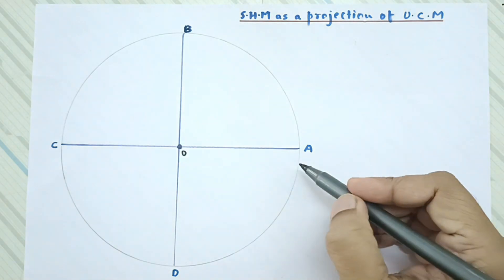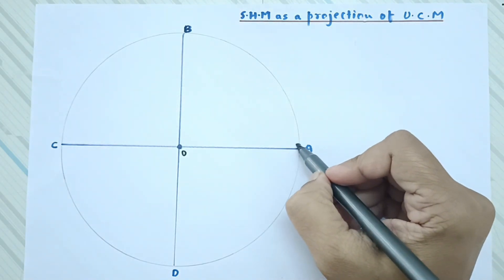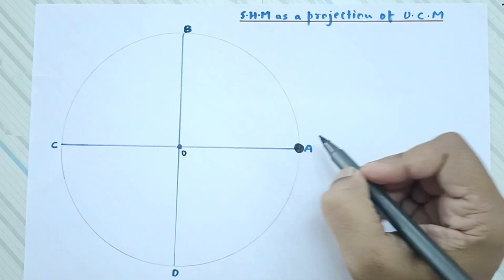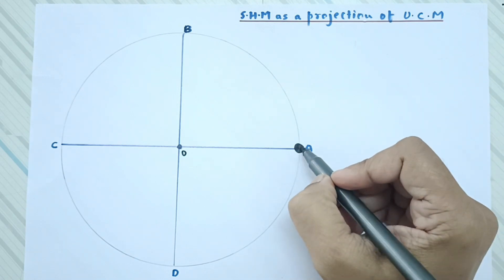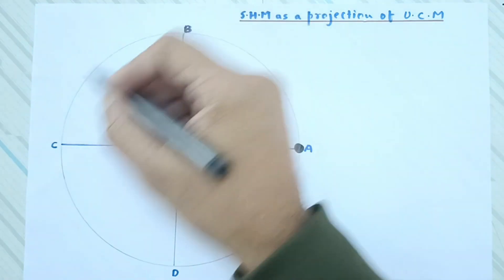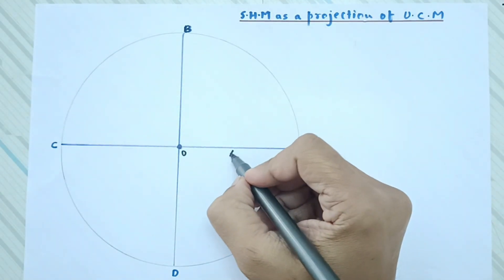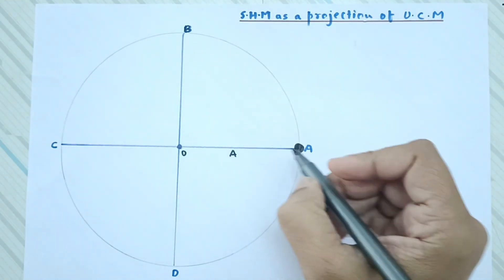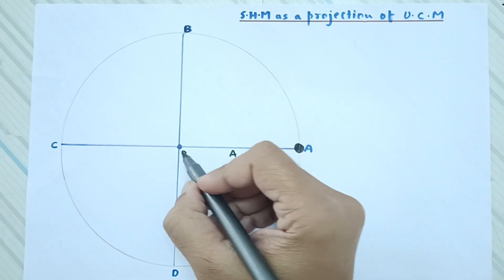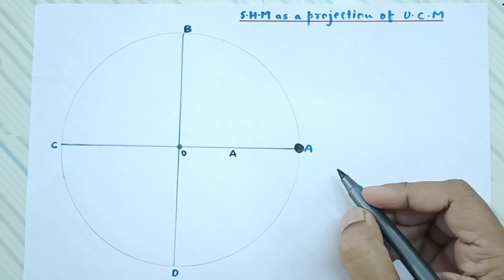We have a particle whose mass is small m, and this particle is performing uniform circular motion along path ABCD. The diameter of the circle is capital A, meaning this particle is going to remain constantly at a distance of A from the center of the circle.